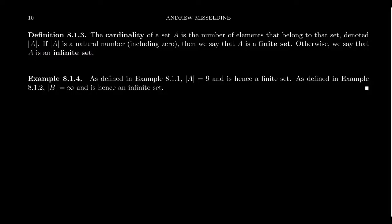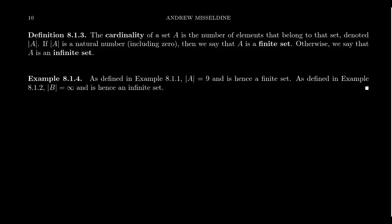If the cardinality — the number of elements — turns out to be a natural number (beware zero is included), we call this a finite set. How could the cardinality of a set be zero? The empty set contains nothing and has a cardinality of zero. This is actually one of the reasons to justify why the natural numbers should include zero — we could define the natural numbers as those numbers which are cardinalities of finite sets. If a set is not finite, we call it an infinite set.